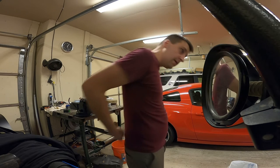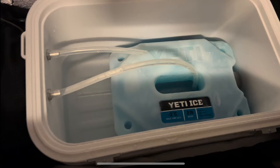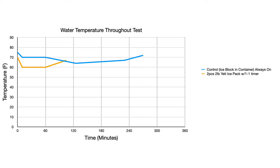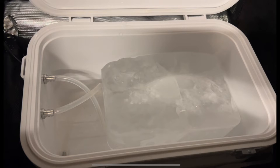The second experiment used two pieces of two-pound Yeti brand ice packs with the timer again set to cycle the pump for one minute on and then one minute off throughout the test. I chose these ice packs based on reviews stating that these were the longest lasting of similar ice packs. The results show similar performance to the bare ice block with the one-to-one timer for the first hour. However, after that, the temperatures back up to 67 degrees after only a total test time of one hour and 45 minutes. Not what I expected from the longest lasting ice pack.